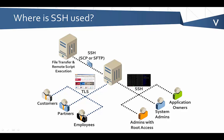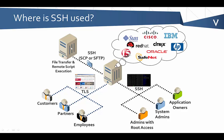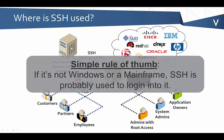SSH is used for all sorts of different applications. What types of systems is it typically used on? It's used on just about any type of system — any appliance, whether it be a router, a firewall, a switch, or any type of Linux or Unix. A good rule of thumb: if it's not Windows or Mainframe, SSH is probably used to log into it. And these days, because of add-ons, you can actually use SSH to log into both of those as well. SSH is very broadly used on just about all mission-critical systems.